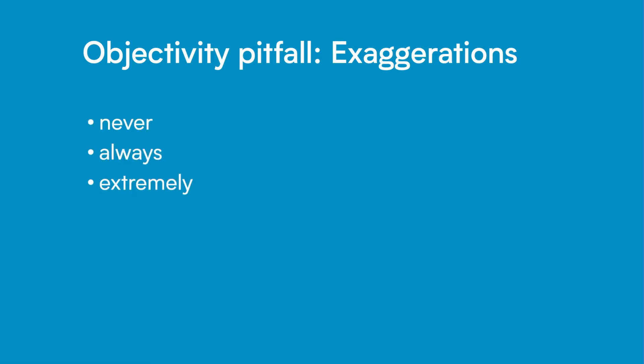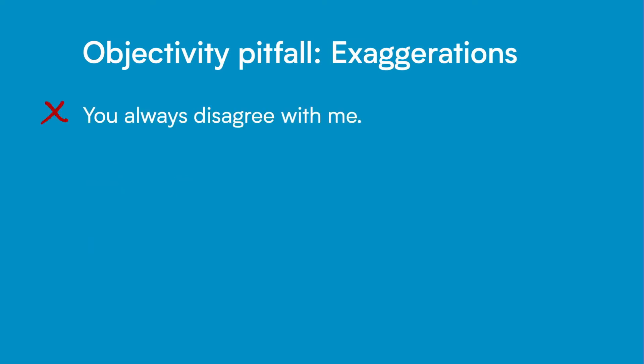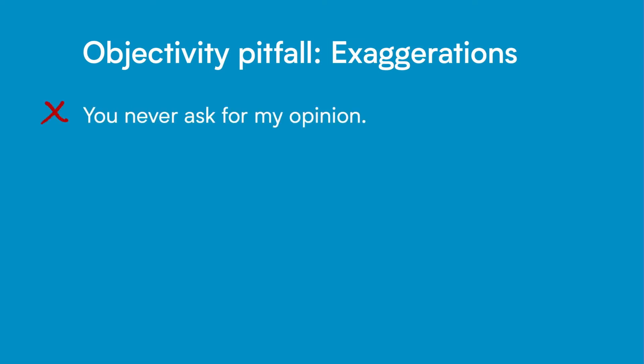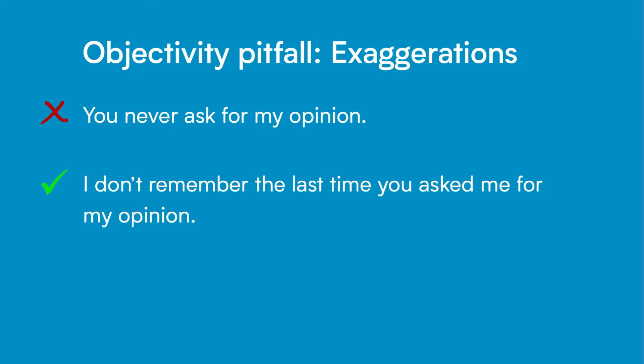The second type of objectivity pitfall are exaggerations — words such as never, always, extremely, etc. Some examples and their more objective replacements: instead of saying 'you always disagree with me,' you could say 'you've disagreed with me on my last three points.' Instead of saying 'you never ask for my opinion,' you could say 'I don't remember the last time you asked me for my opinion.'